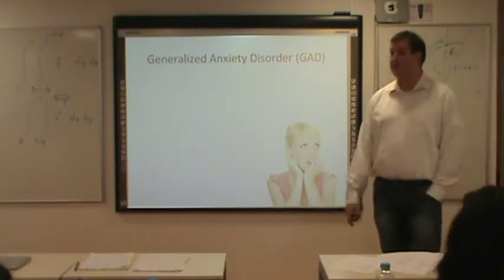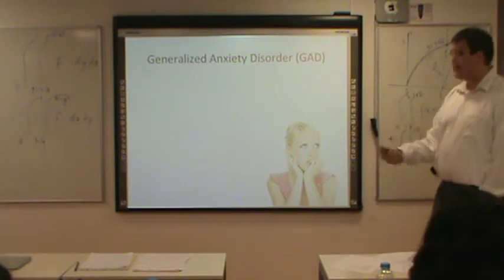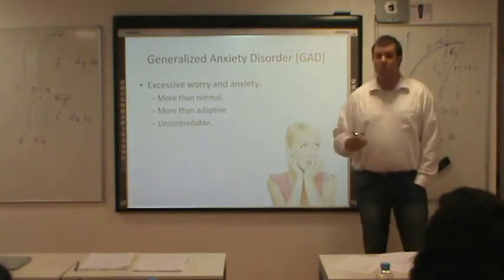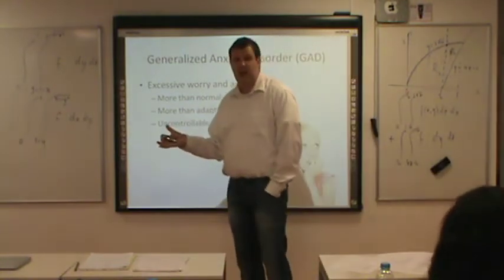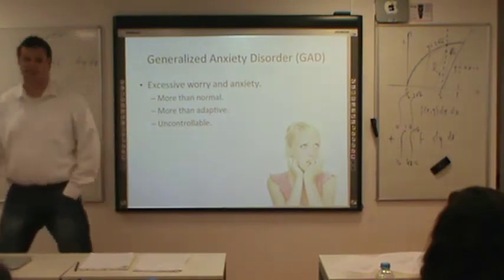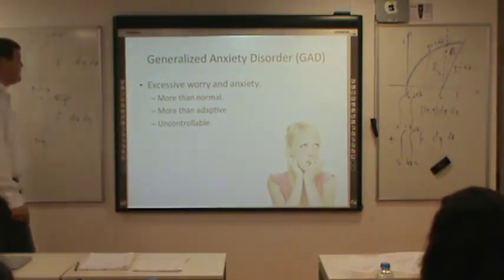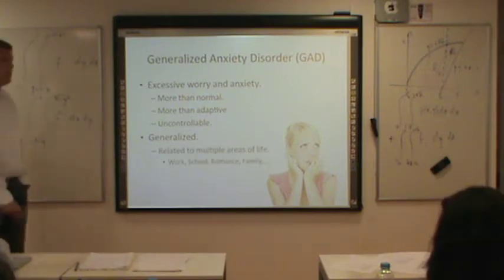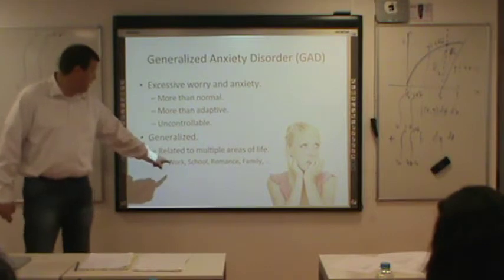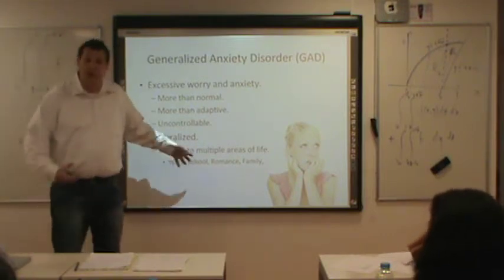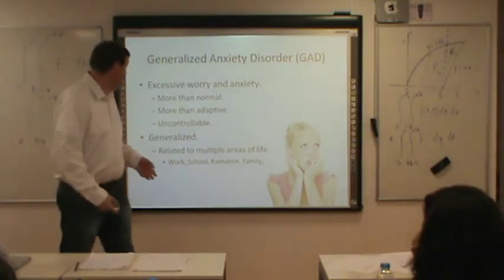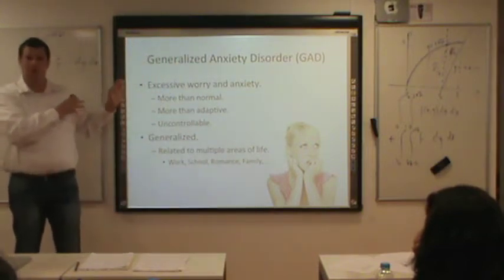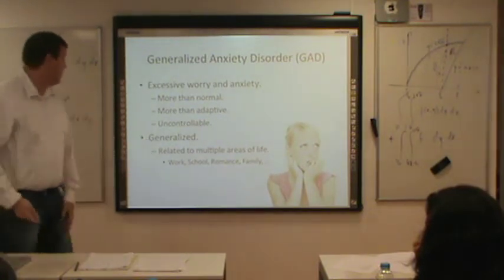The first disorder is generalized anxiety disorder. With generalized anxiety disorder, there is excessive worry and anxiety — much more than normal. If you see someone cute and want to ask them out on a date, you'd feel anxious. Someone with GAD would feel much more anxious than you normally would. It's more than what's adaptive, it's uncontrollable, and it's generalized — related to lots of different areas of life. They worry about work, school, grades, teachers liking them, romance, and family.